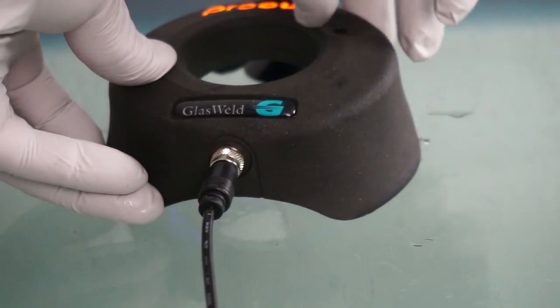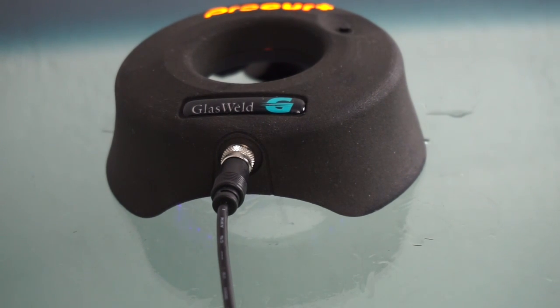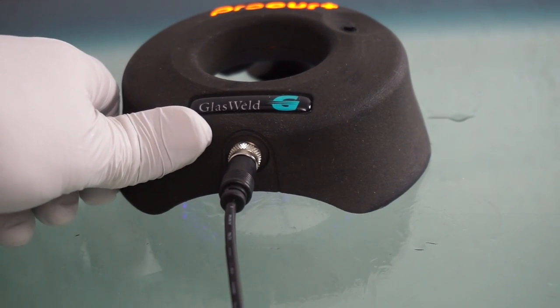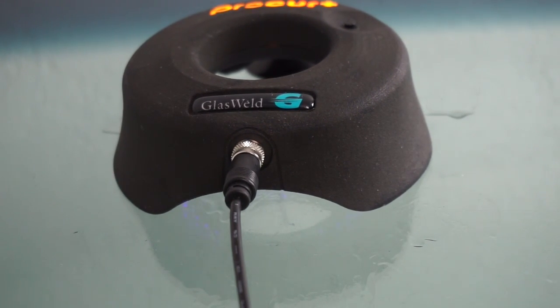Next place the ProCure Plus curing light in position and start the timer for one minute curing. Depending on the length of the long crack you may need to reposition the light two or three times along the crack in order to cure the entire crack.